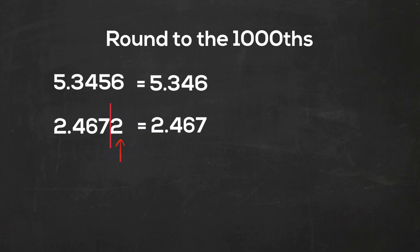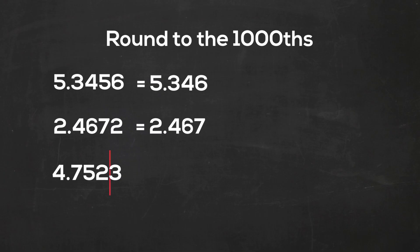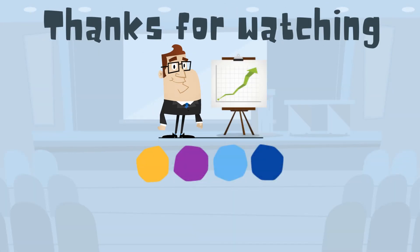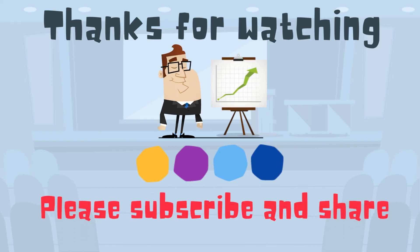And finally, 4.523. Draw a line right after the thousandths. I look at the three — four or less, let it rest. So the two is going to rest, the three is going to drop off, and it becomes 4.752. So I hope that helps with rounding numbers in math class. Thanks for watching, and MooMooMath uploads a new math and science video every day. Please subscribe and share.